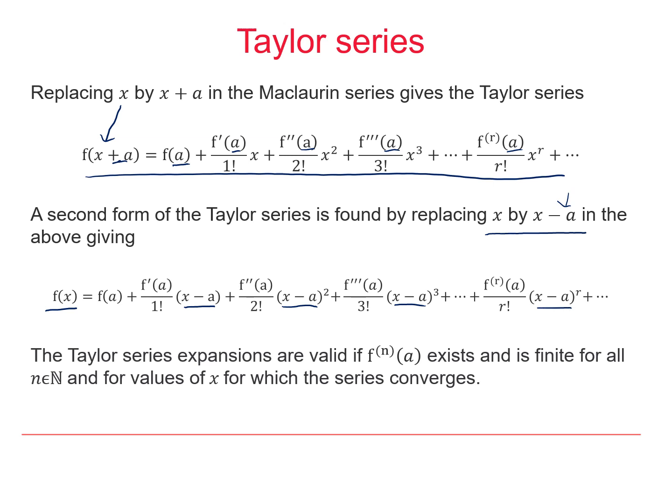The validity rules for the Taylor series are very similar to the Maclaurin series. We have to evaluate the derivative of the function at A and it must exist and it must be finite and also the series has to converge.